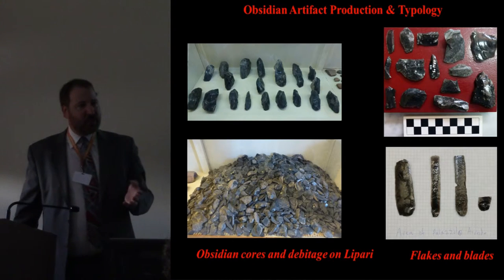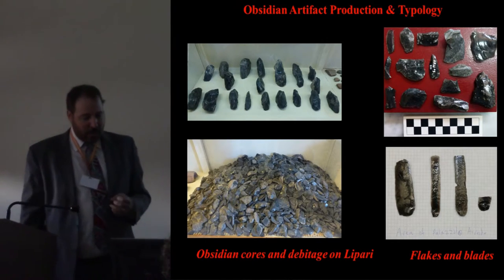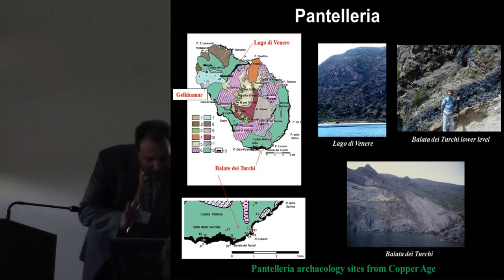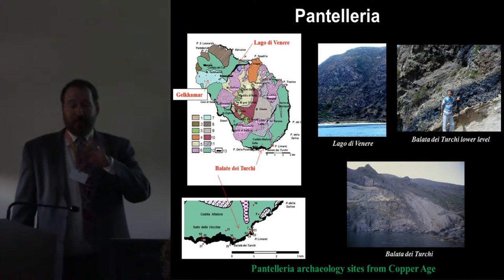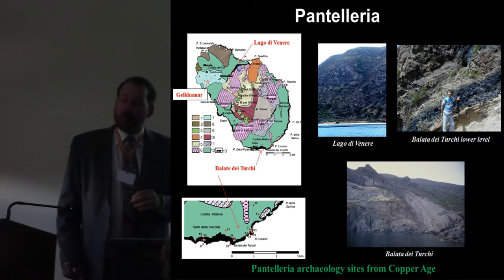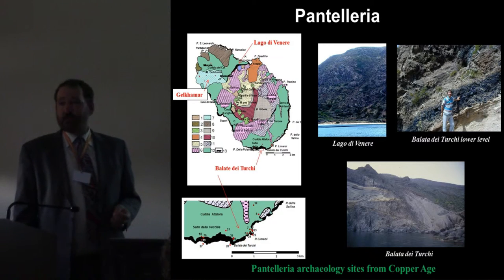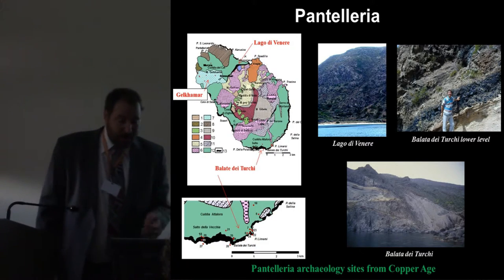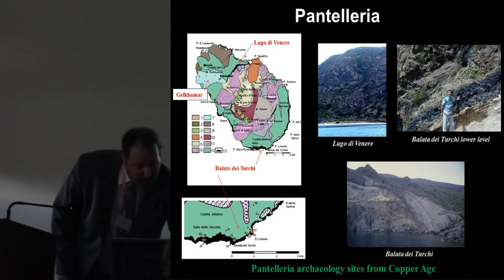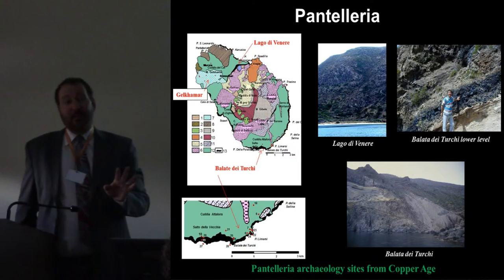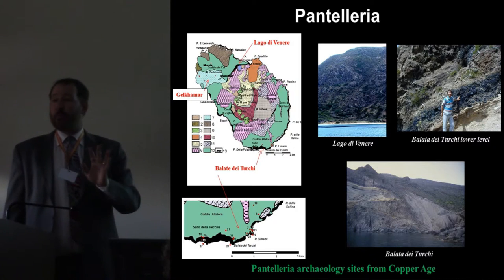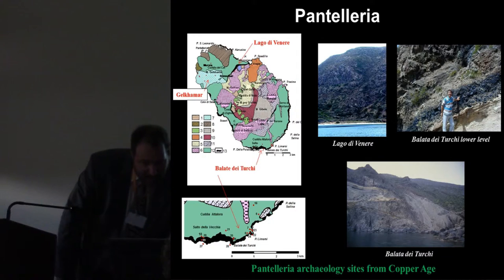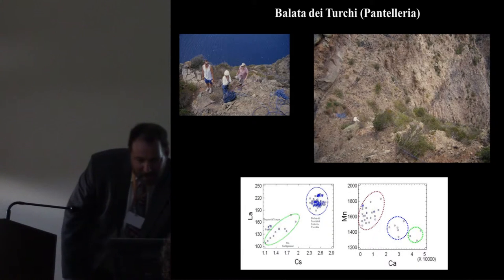On Lipari, but also in Sicily and southern Italy, obsidian was the major lithic material being used. Pantelleria is much further away than Lipari is from Sicily. Pantelleria was not occupied on a regular basis for another couple of thousand years — probably 3,000 years — compared with Lipari. Nevertheless, the obsidian from Pantelleria was used beginning at the exact same time as Lipari, Sardinian, and Palmarola obsidian.